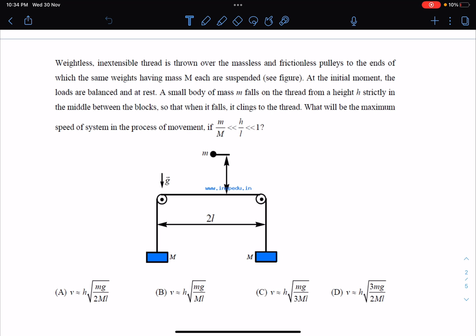At the initial moment, the loads are balanced and are at rest. A small body of mass m is falling from a height of h, this height is h, and strictly in the midway, so exactly at the midway it is falling, so that when it falls it will cling to the thread.